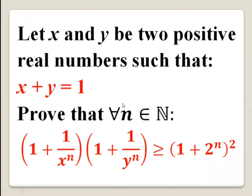We have to prove that for every natural number n, we have (1 + 1/xⁿ) multiplied by (1 + 1/yⁿ) is greater than or equal to (1 + 2ⁿ) all squared.